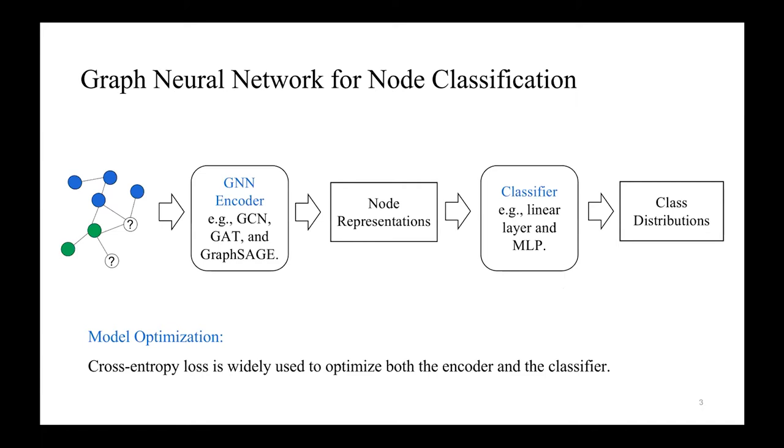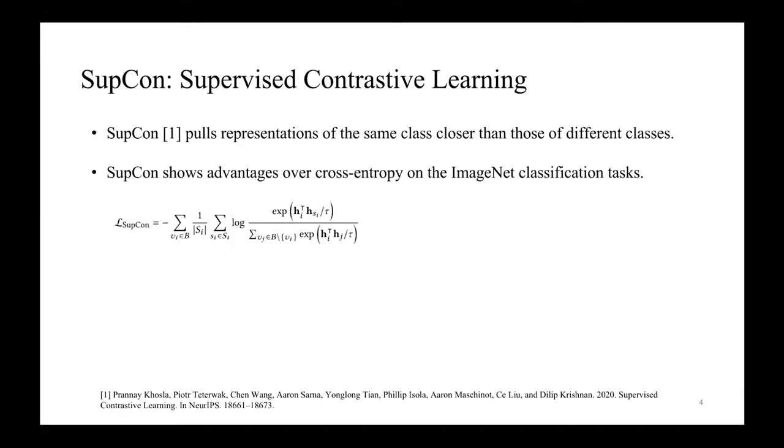The most popular framework to perform node classification includes two key components: a GNN encoder and a classifier. The GNN encoder encodes node representations according to the graph structure and the node attributes. Then, based on the node representations, the classifier predicts node labels. For model optimization, the cross entropy loss is widely used to optimize both the encoder and the classifier. Besides cross entropy, supervised contrastive loss is also effective.